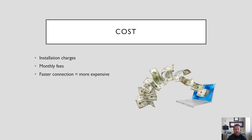Finally, let's talk about cost. Typically when you sign up for an internet package, you will have monthly fees as well as installation charges. The installation charge is usually a one-time fee — I think it was like $50 to $70 for them to come out and rewire and set it up. From there, you'll be charged monthly fees, and that's usually the same every month. Typically, the faster the connection, the more expensive your monthly fees will be.